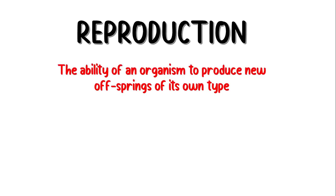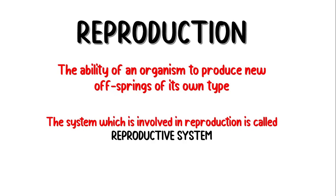The ability of an organism to produce new offspring of its own kind is called reproduction. The system which is involved in reproduction is called the reproductive system. So now, let's discuss about the human reproductive system.